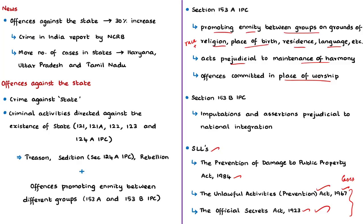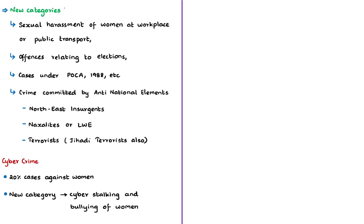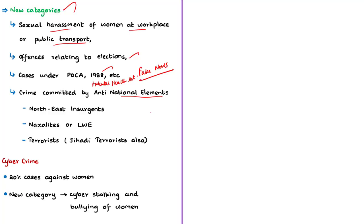The report also includes many new categories such as sexual harassment of women at the workplace or public transport, offenses relating to elections, obscene acts at public places, circulation of fake news, chit funds fraud, cases under the Prevention of Corruption Act and Mental Health Act, noise pollution, and defacement of public property offenses. One more new category is crime committed by anti-national elements, which includes offenses by northeast insurgents, naxalites or left-wing extremists, and offenses by terrorists including jihadi terrorists.